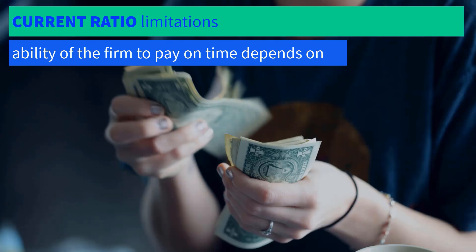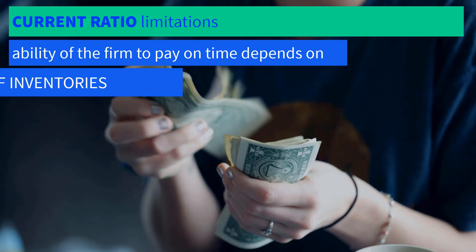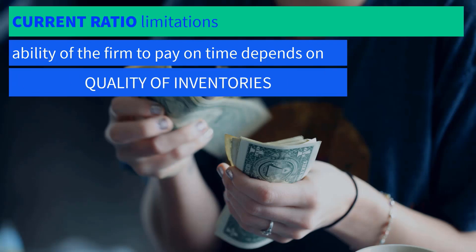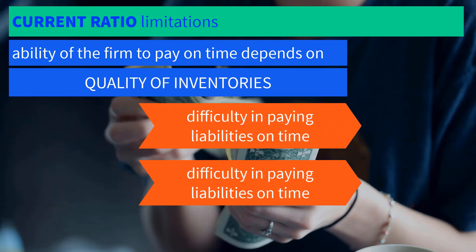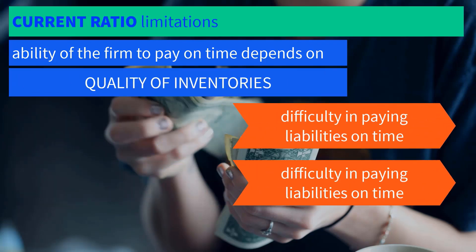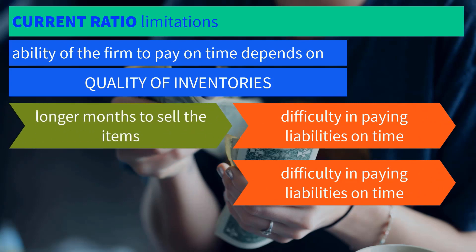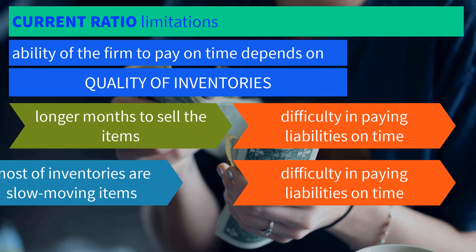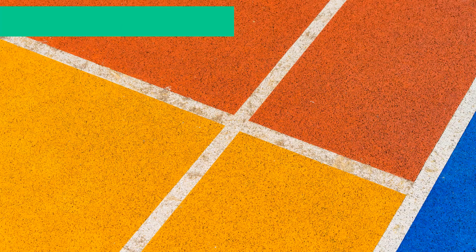The ability of the firm to pay on time also depends on the quality of inventories. A company will have difficulty paying liabilities if its inventories take more months to be sold or when most of its inventories are non-moving items.